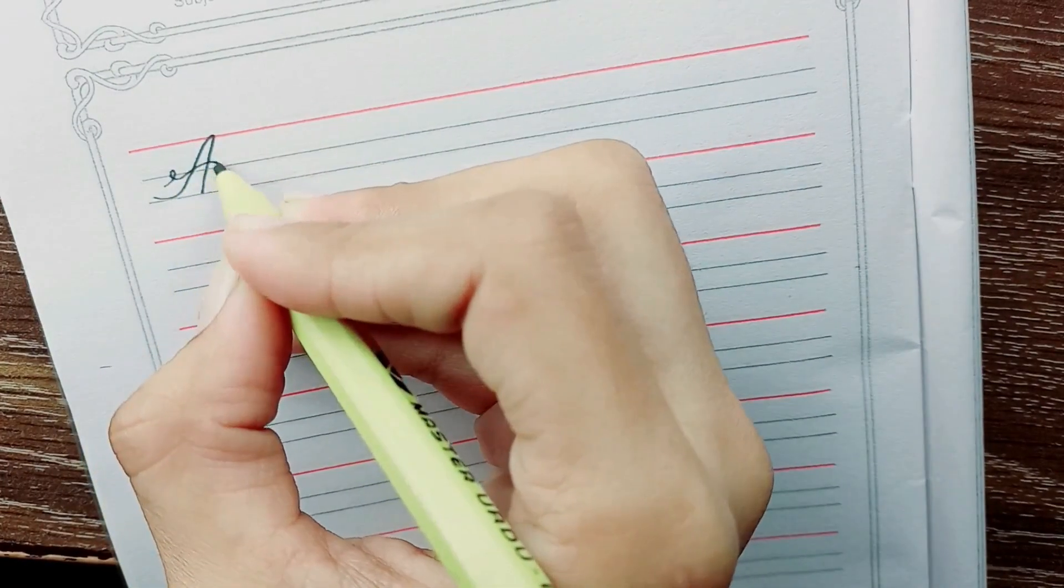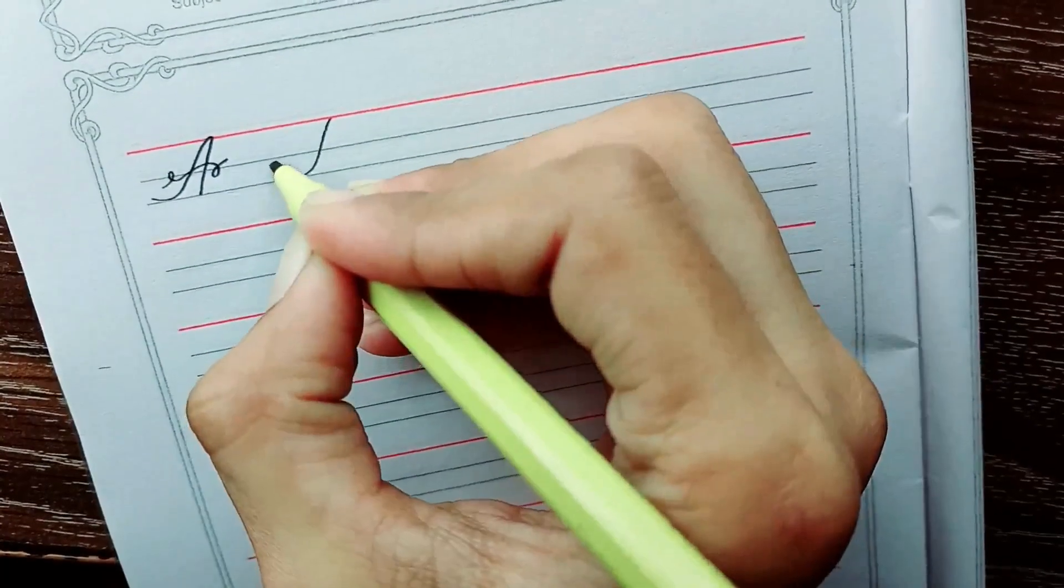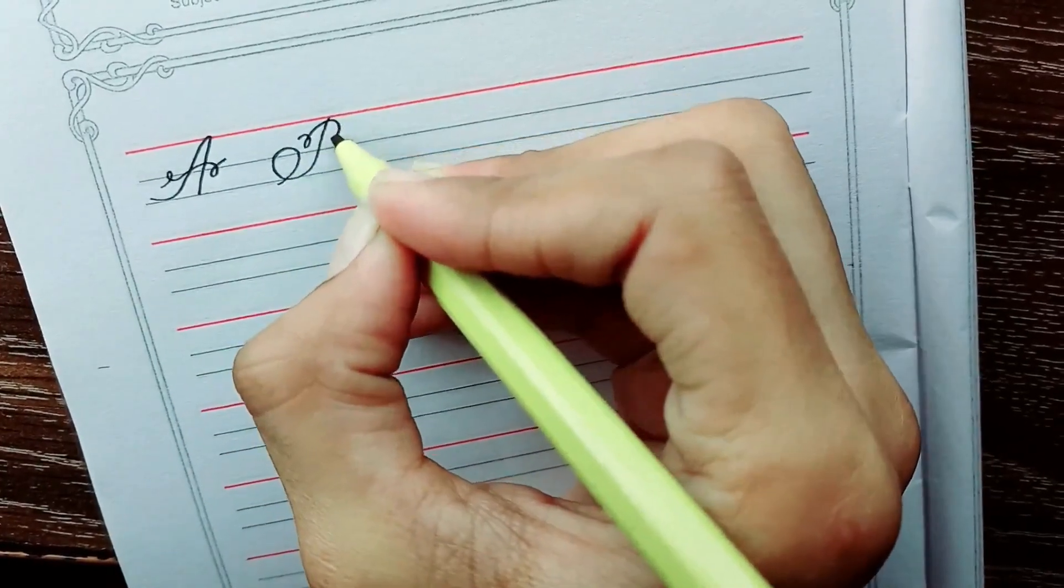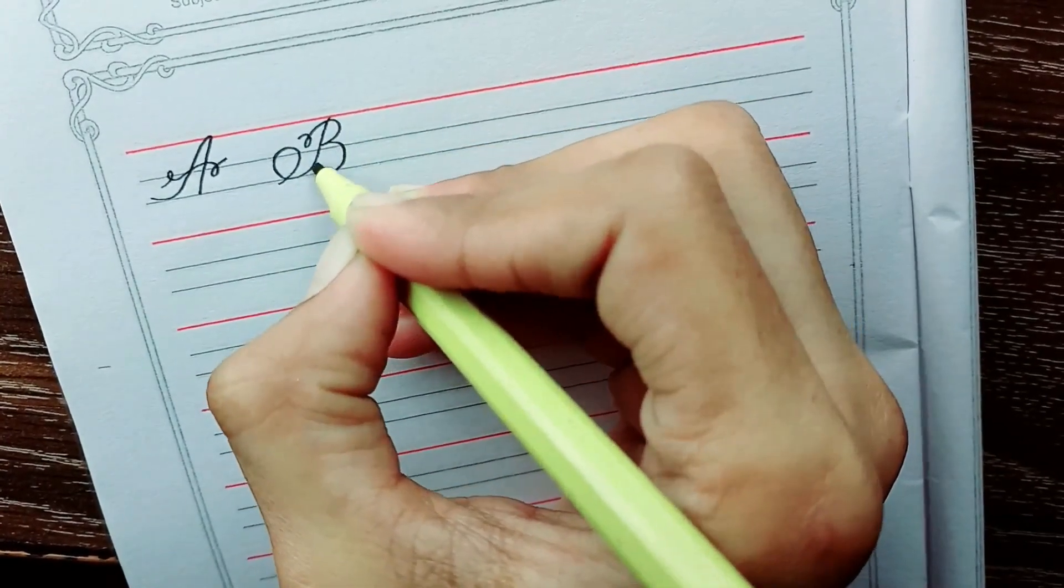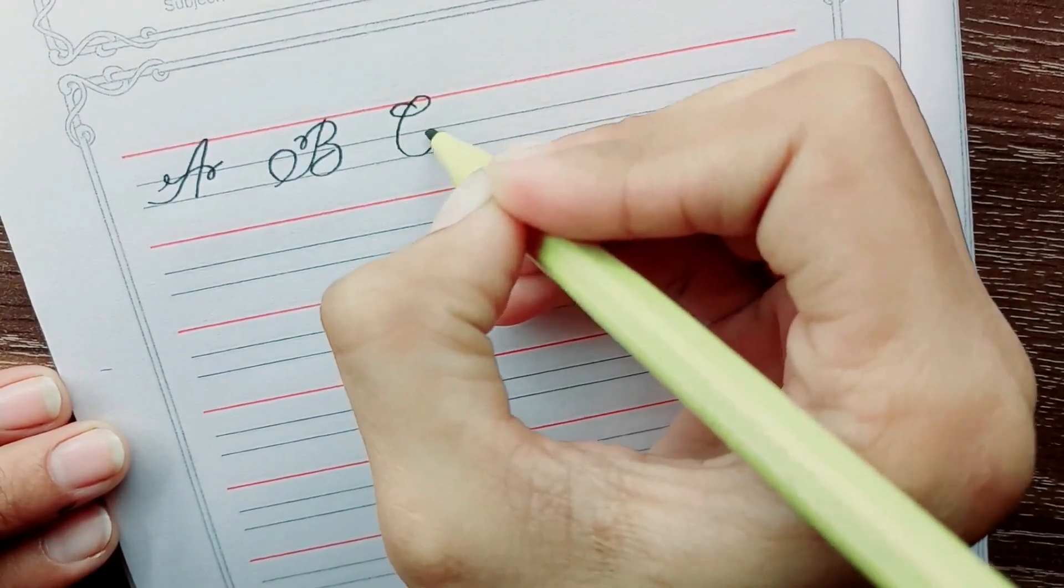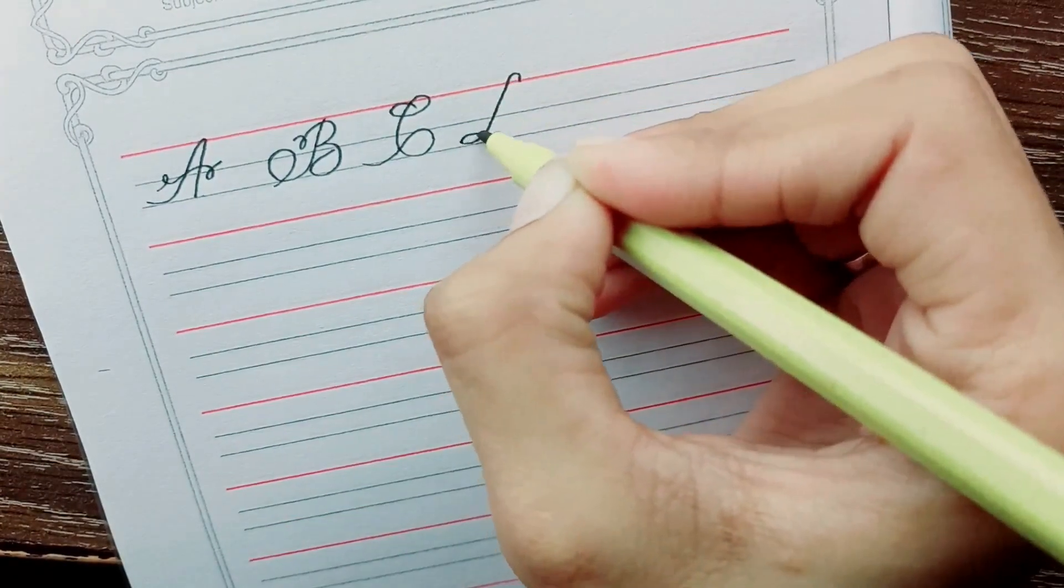A. A for apple. B. B for bed. C. C for cup. D. D for deer.